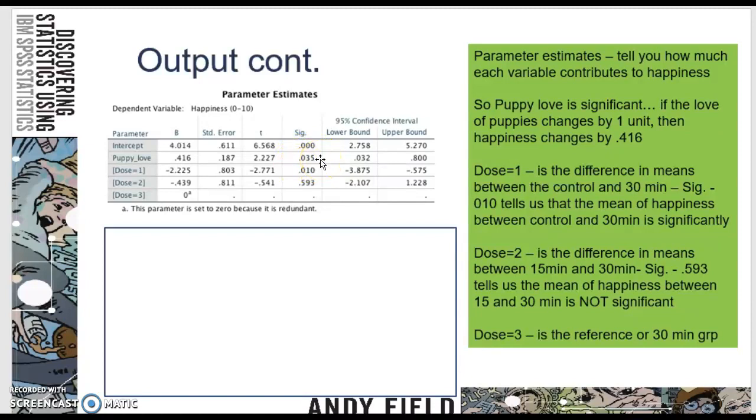If we look at puppy love and we look at significance, we find that it's .035. So if the love of puppies changes by one unit, then happiness changes by this coefficient .416. So what are these dose equals one, two and three?